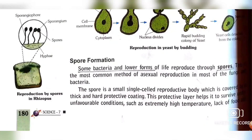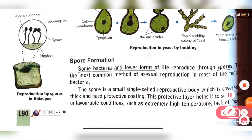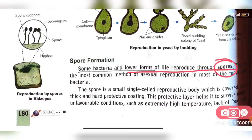The third method is spore formation. Some bacteria and lower forms of life reproduce through spores. Spores are small, single-celled reproductive bodies.